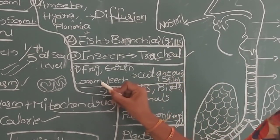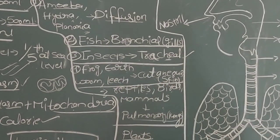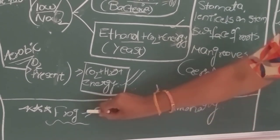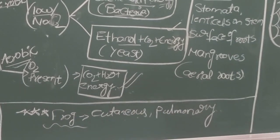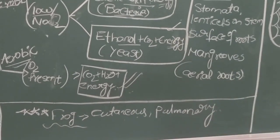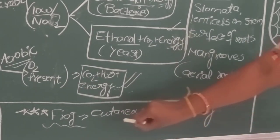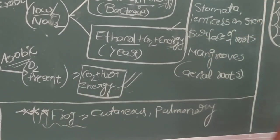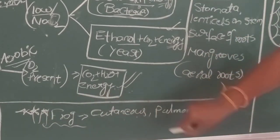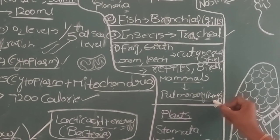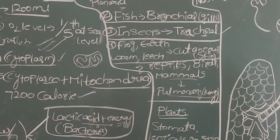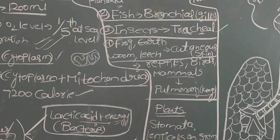If the respiratory organ is the skin, it is called cutaneous respiration, which occurs in earthworms, leeches, and frogs. Frogs are a special case — being amphibians, they use both cutaneous and pulmonary respiration depending on whether they are in water or on land. All reptiles, birds, and mammals (including humans) have well-developed lungs, and their respiration is called pulmonary respiration.